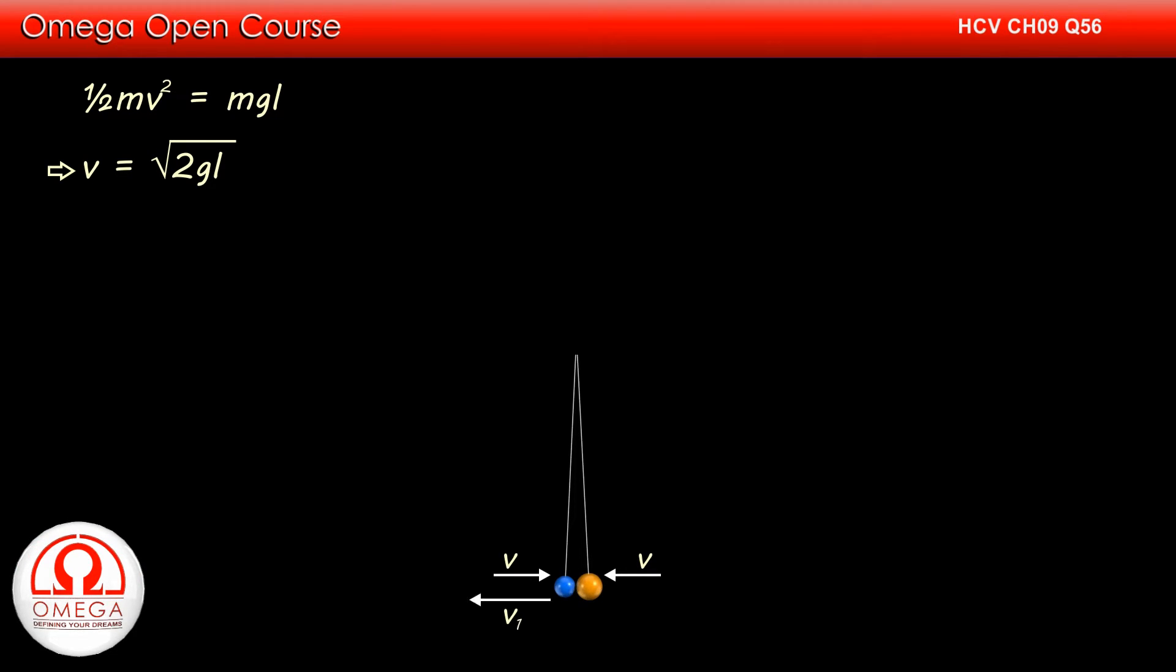Let us assume the speed of the smaller ball just after the collision to be v1 towards left and that of the larger ball to be v2 towards right. If we take left as positive direction, then the momentum of the system just before collision is 2mv minus mv towards left. The momentum of the balls just after the collision is mv1 minus 2mv2 towards left.